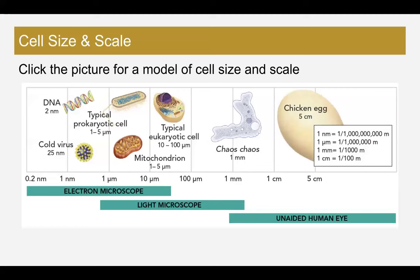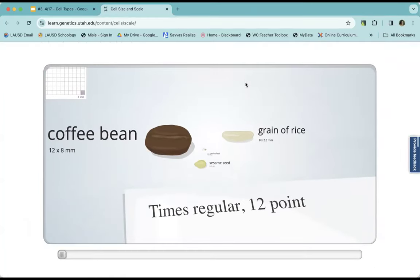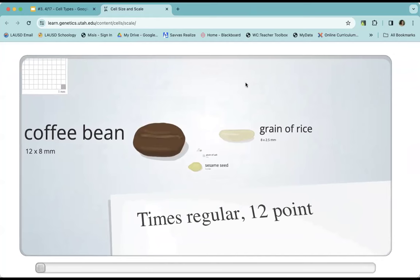We're going to talk quickly about size and scale of cells. In your slides, if you click on this link, it will take you to a size and scale guide of a cell. It takes you through things we know, like coffee beans, sesame seeds, and grains of rice. Up in the upper left-hand corner there is a scale you can look at, and the scale will switch as we zoom in. Right now we're in millimeters.